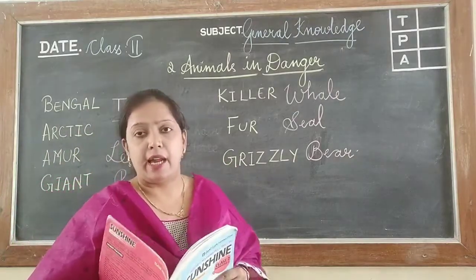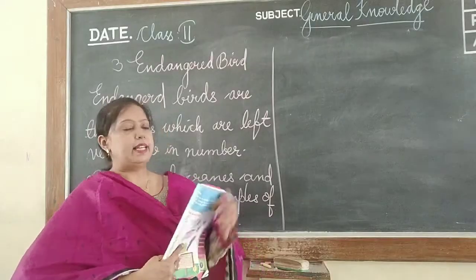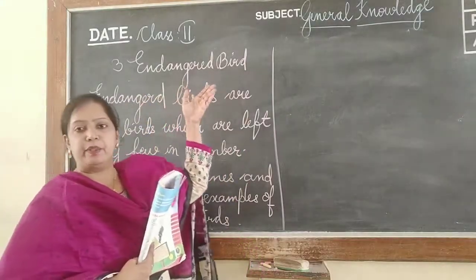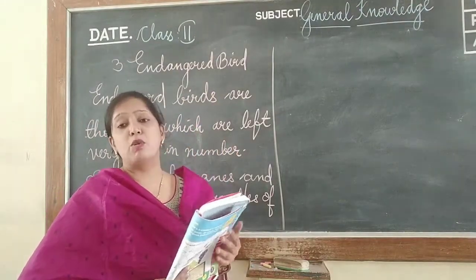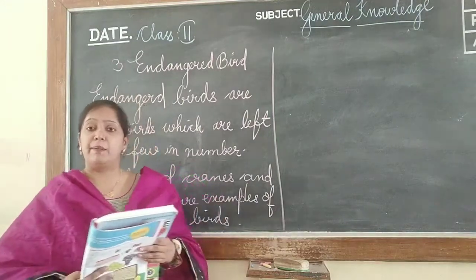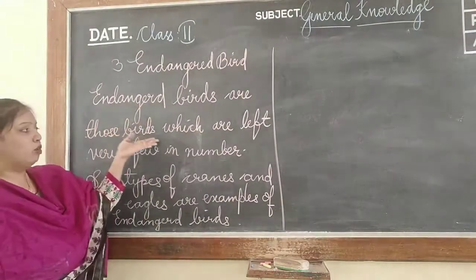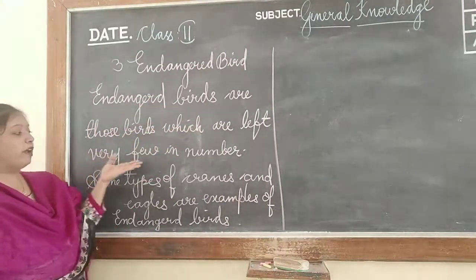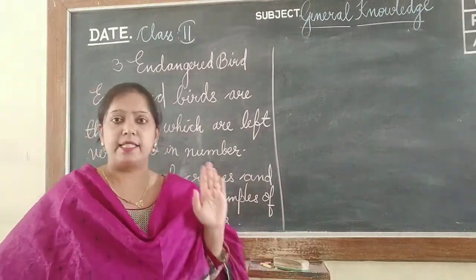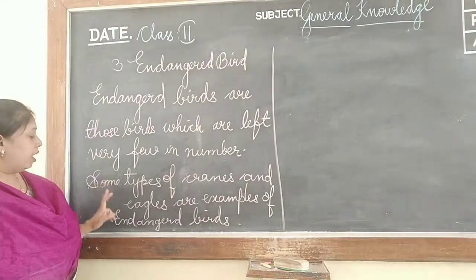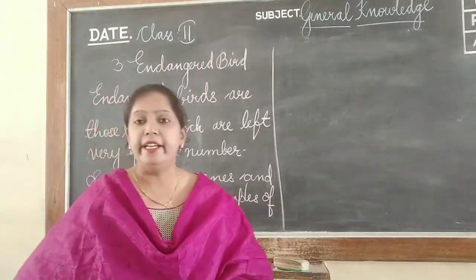We have to protect animals. This is about animals in danger. Now, lesson number 3 — Endangered Birds. In the last lesson we learned about endangered animals; now, endangered birds. Birds are also becoming fewer in number. Endangered birds are those birds which are left very few in number. Some types of cranes and eagles are examples of endangered birds.